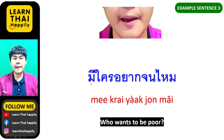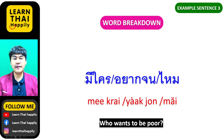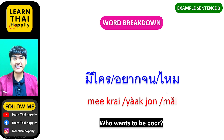มีใครอยากจนไหม — มีใคร in this context means who, อยากจน means wants to be poor, and ไหม is used as a particle in a question sentence.